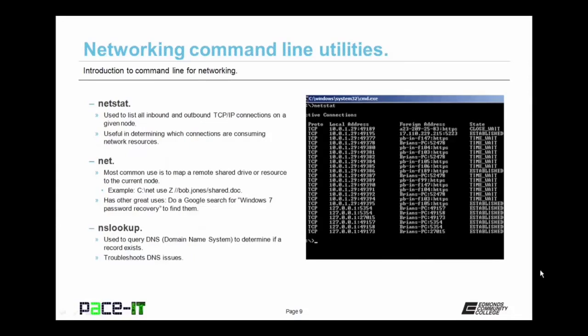Netstat is used to list all inbound and outbound TCP/IP connections on a given node — very useful in determining which connections are consuming network resources. The net command is most commonly used to map a remote shared drive or resource to the current node. For example, to map a network share: 'net use [drive letter] \\[path to shared resource]'. NSLOOKUP is used to query DNS to determine if a record exists — very useful in troubleshooting DNS issues.